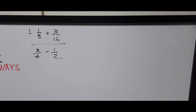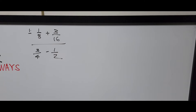The first way of solving complex fractions is to find a common denominator for all the fractions involved. The second way is to work independently on the numerator and the denominator by finding their common denominators separately. The third way is what I call the butterfly method, where you multiply by criss-crossing the numerator and denominator.